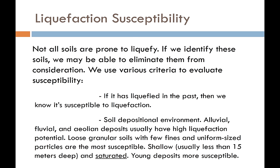Let's talk first about liquefaction susceptibility. Not all soils are prone to liquefaction, and if we identify these soils ahead of time, we can remove them from the analysis so they won't contribute to the problem. There are different levels of criteria for establishing susceptibility. For instance, if there's evidence that liquefaction has occurred at our site in the past, that's a deal killer — we know right off the bat that liquefaction is likely in the future. Liquefaction tends to occur in the same places over and over again, so if a site has liquefied before, we can have great confidence it will probably liquefy again.